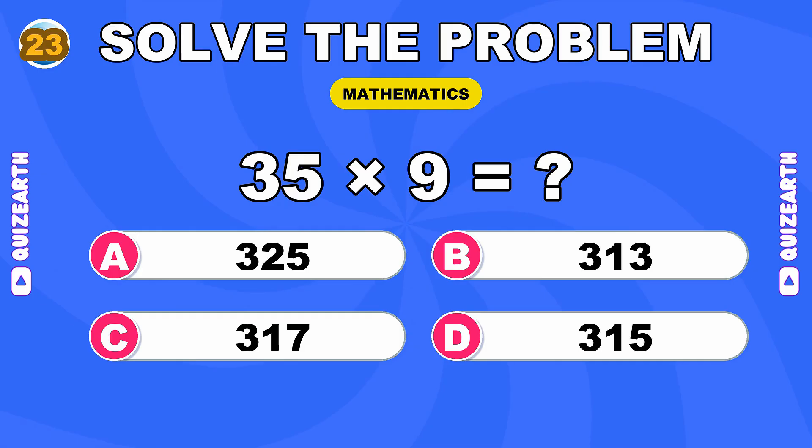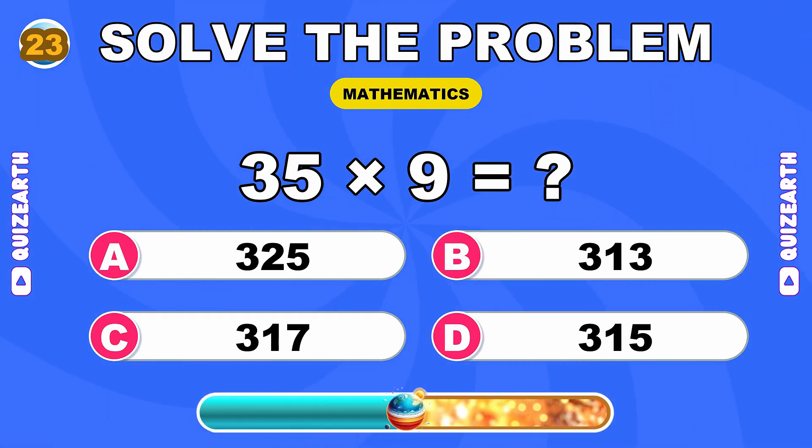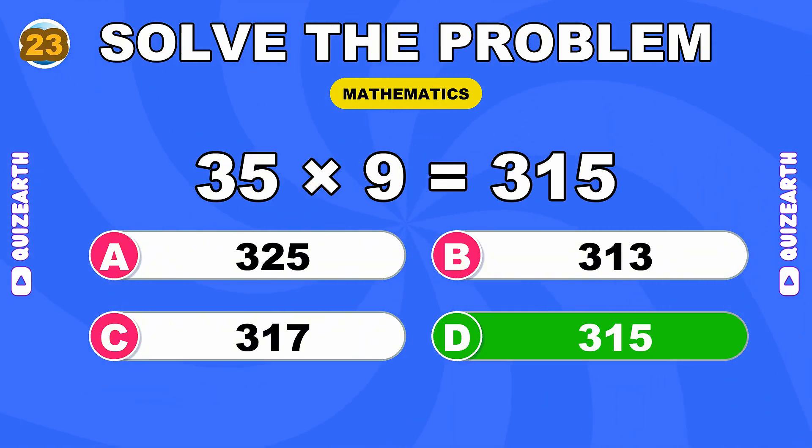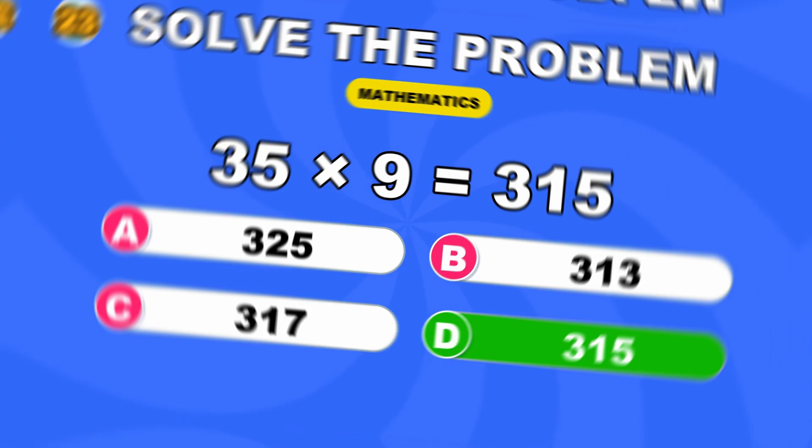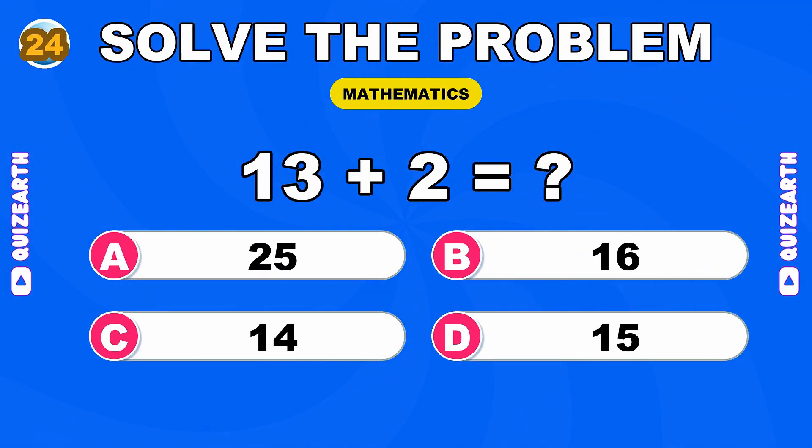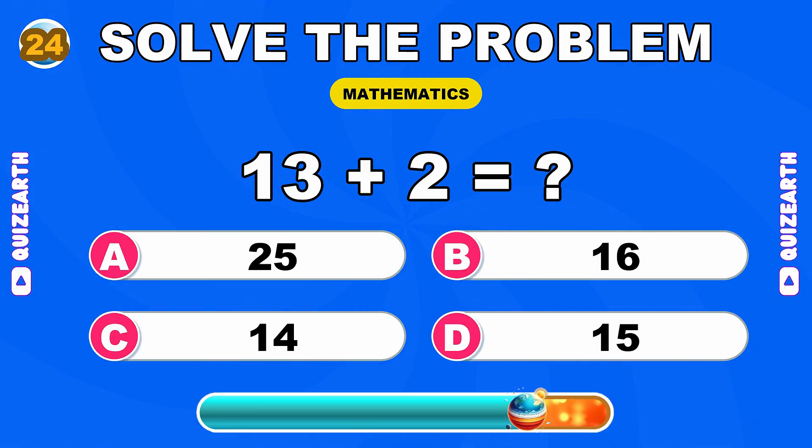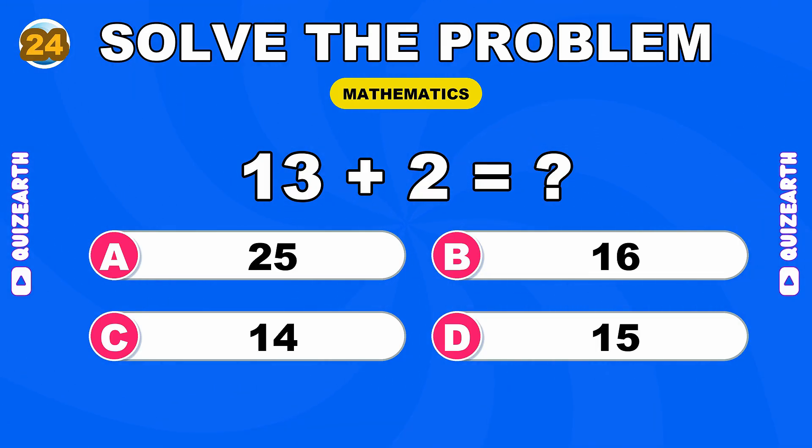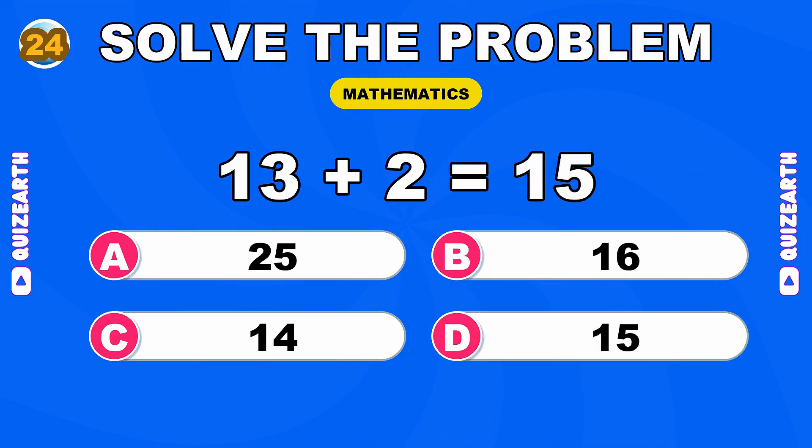How much is 35 times 9? Pure excellence, 315. What do you get when you add 13 and 2? Razor sharp, 15.